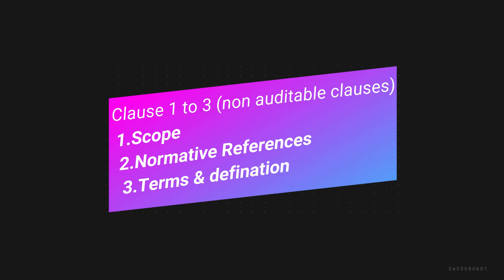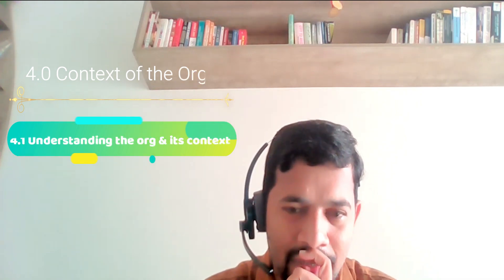Clauses 1 to 3 — scope, normative references, and terms and definitions — remain non-auditable across all ISO standards, whether 9001, 14000, 45000, or others. The auditable clauses start with Clause 4, which is mandatory all the way through to Clause 10. Clause 4 deals with the context of the organization and has four subclasses, just like ISO 9001.